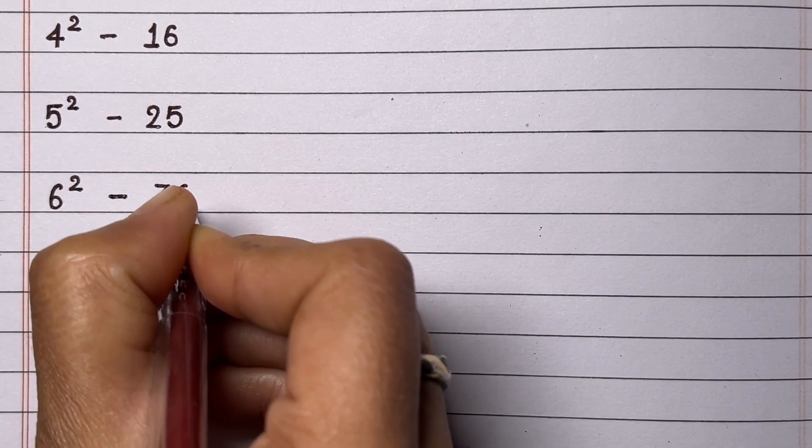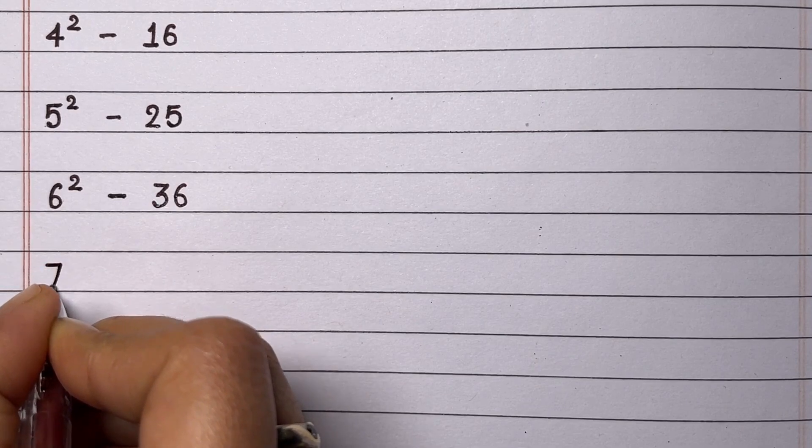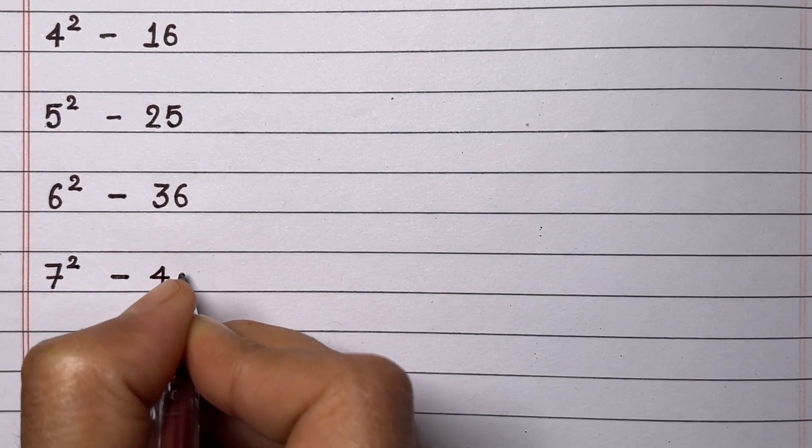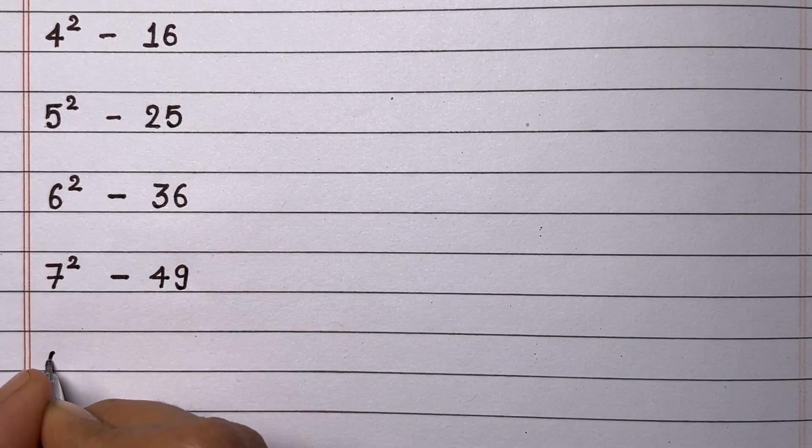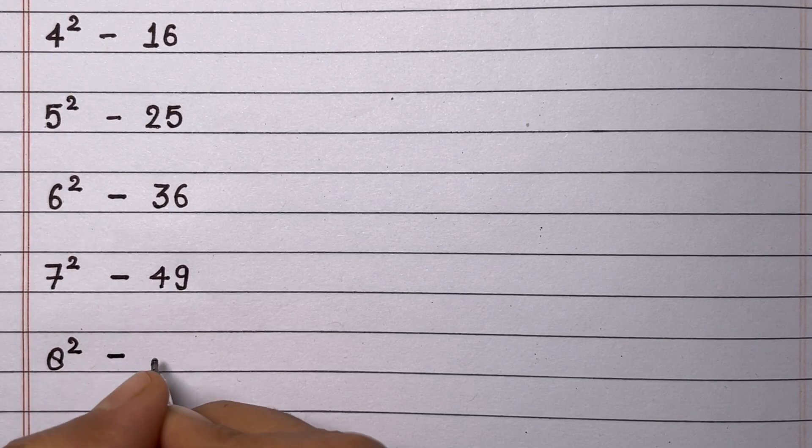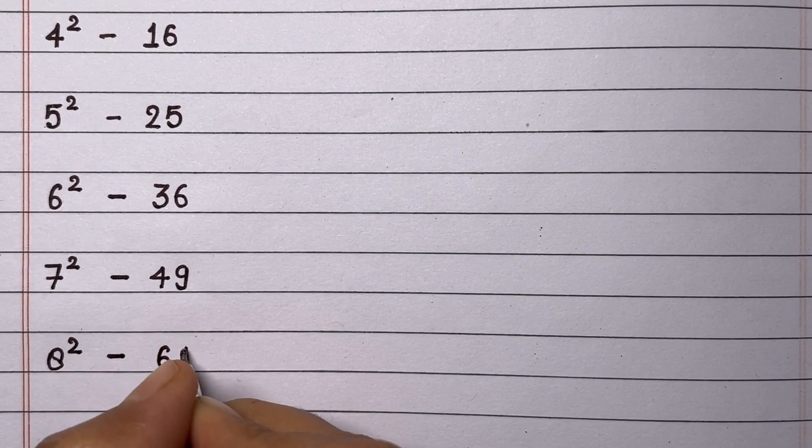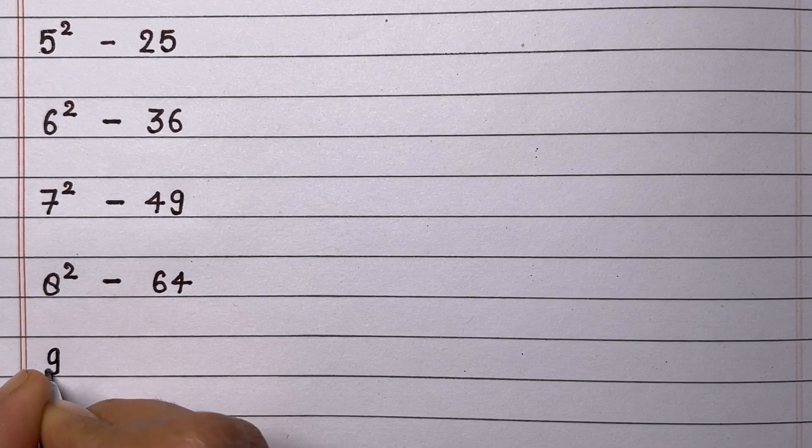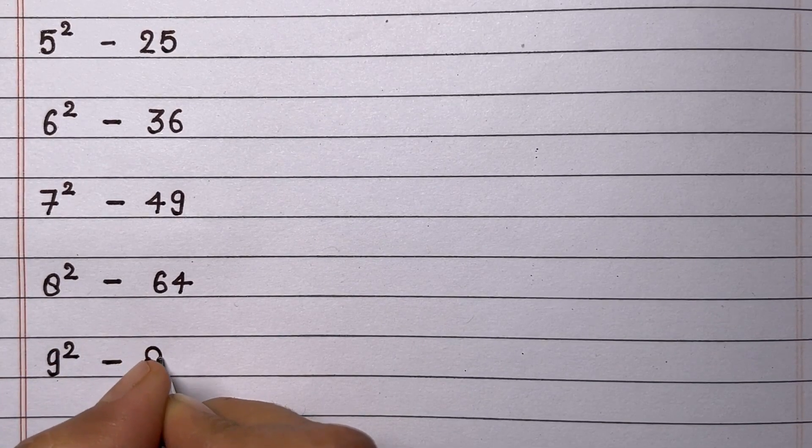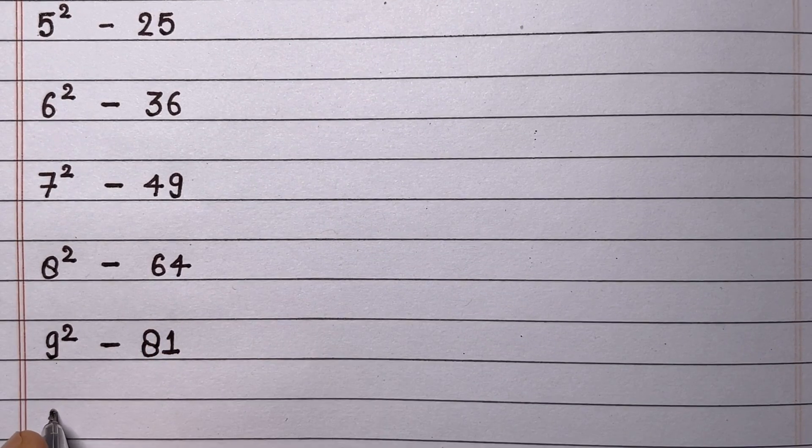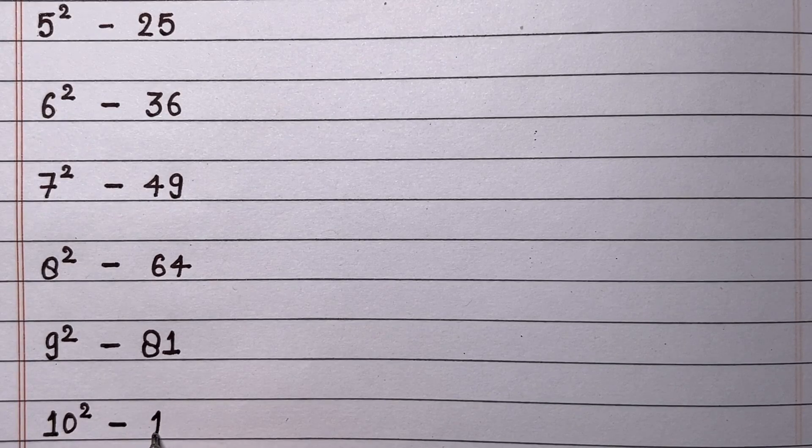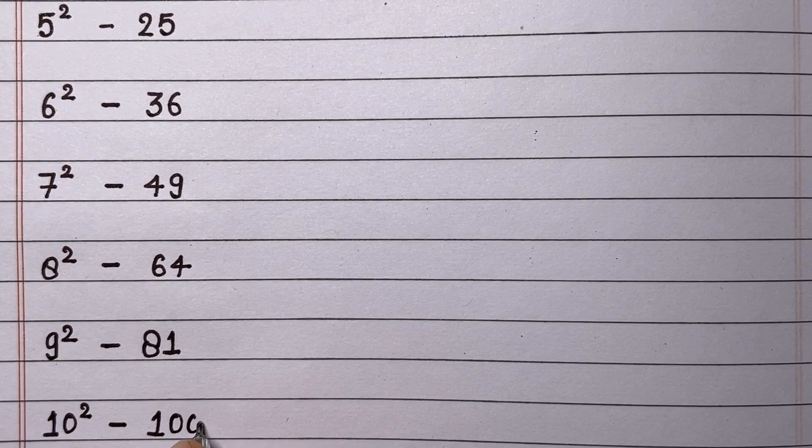Square of 6 is 36. Square of 7 is 49. Square of 8 is 64. Square of 9 is 81. Square of 10 is 100.